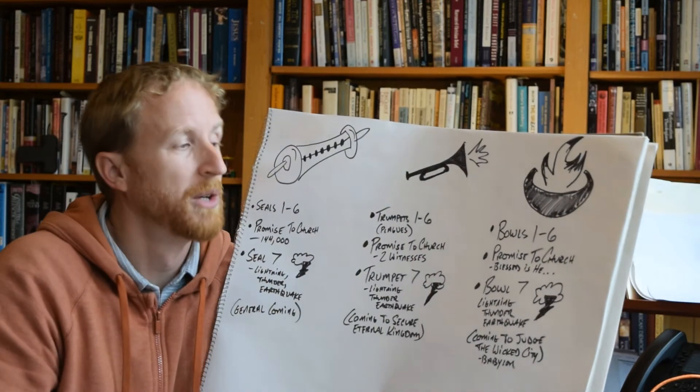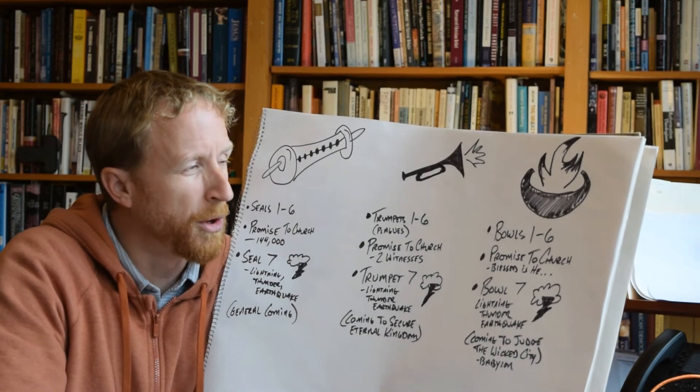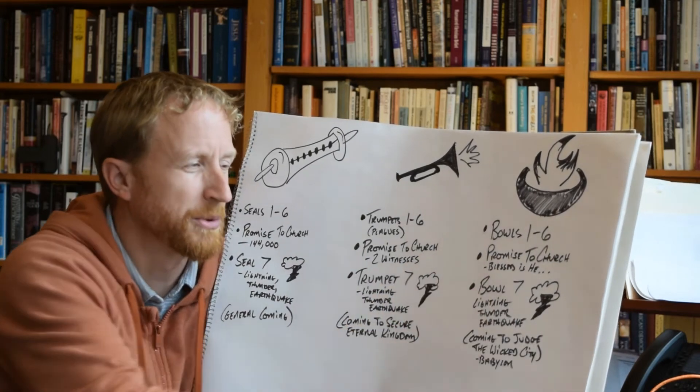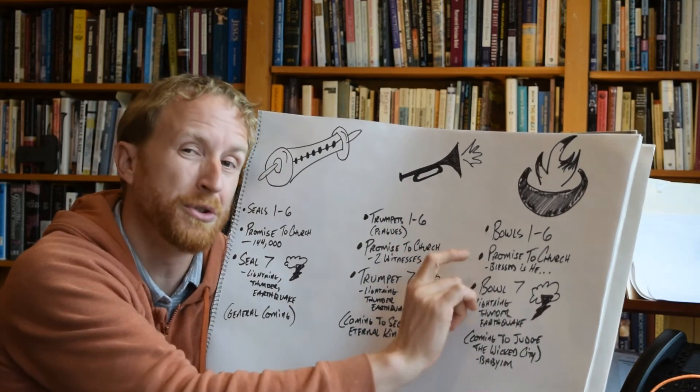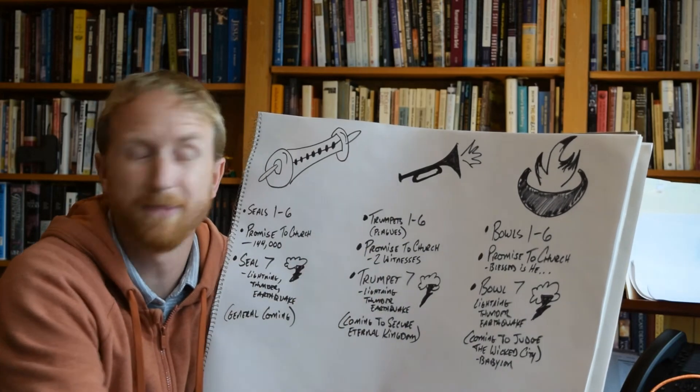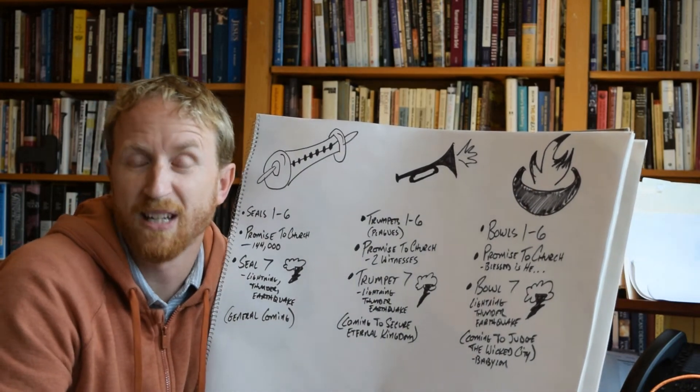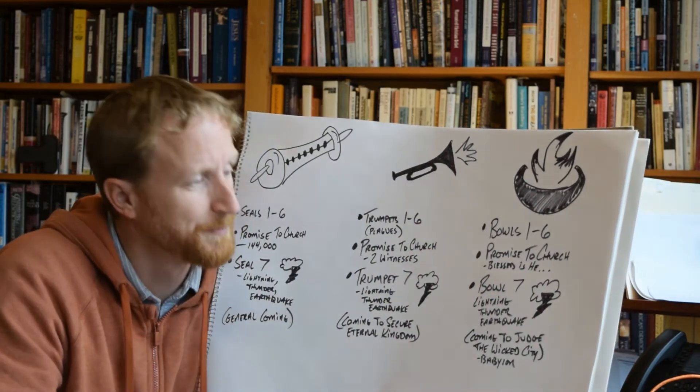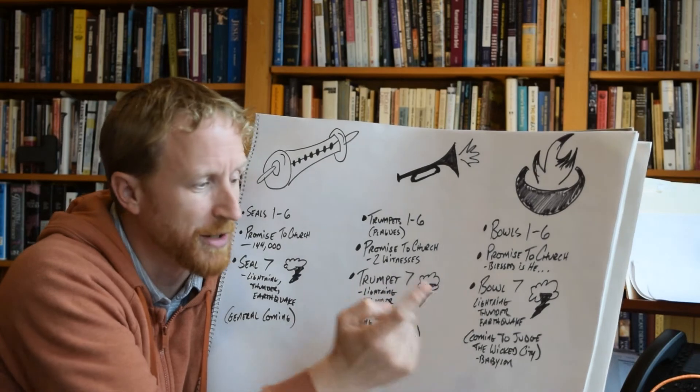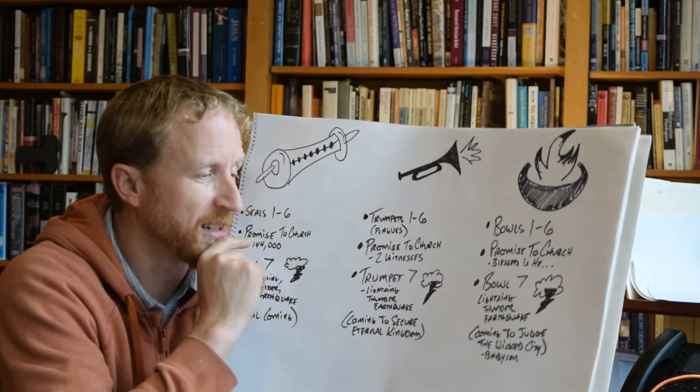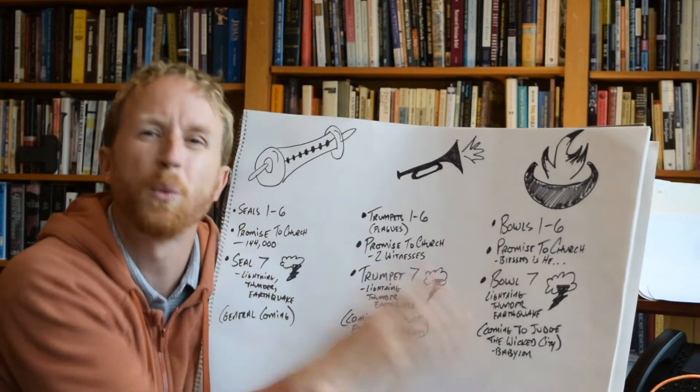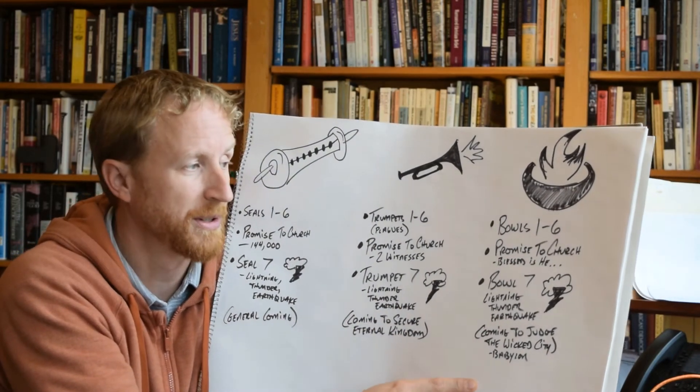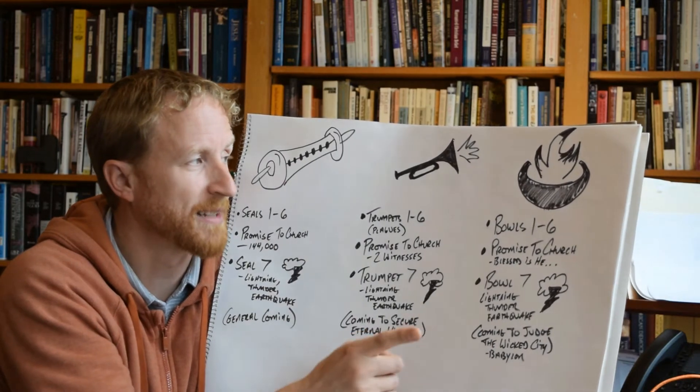Okay, but we're not done yet. We got another cycle. We got bowls, the seven bowls. This one's a little bit more condensed, all in one chapter, in chapter 16. We get bowls one through six. We get a very brief interlude, word of promise, where God says, behold, I'm coming, like a thief in the night. So, blessed is the one, blessed is he who stays awake and is alert to my coming. And then we get bowl seven, accompanied by lightning, thunder, and an earthquake, and announcements of God's final judgment on the wicked city, which he calls Babylon, which is kind of important. We'll come back to that in a second.